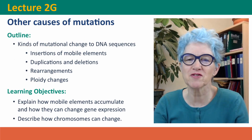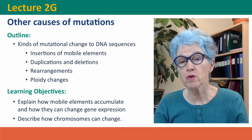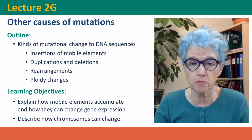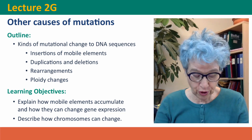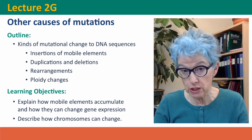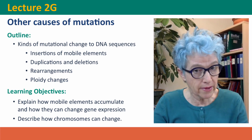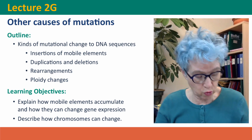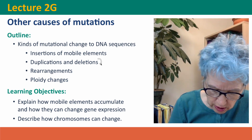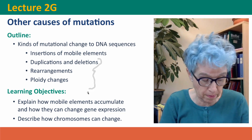Hi everyone, welcome back to Useful Genetics. This is lecture 2G, where we're thinking about other causes of mutations than mistakes by DNA polymerase. We'll think about insertions of mobile elements, which are a major cause of mutations, and some of their consequences. Then we'll discuss changes to chromosomes — duplications and deletions, rearrangements, and changes in chromosome number.